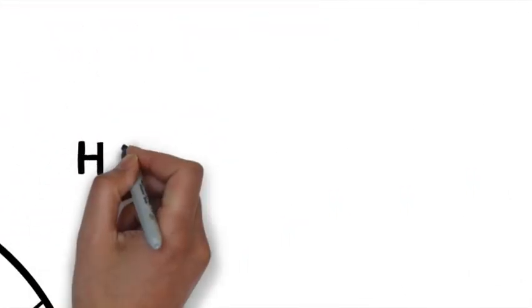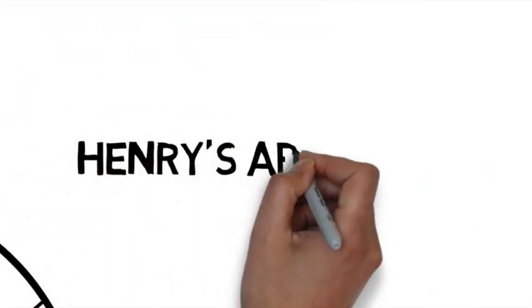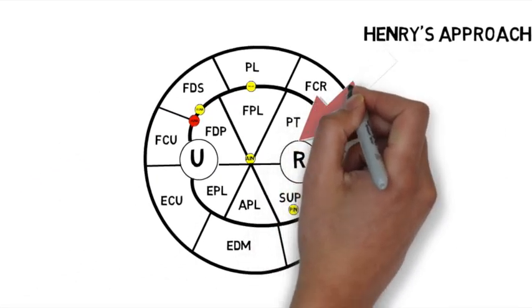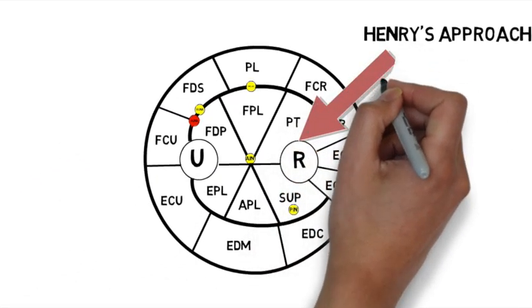Using this cross-section diagram to appreciate the approaches, Henry approach is the interval between FCR and brachioradialis, as seen.